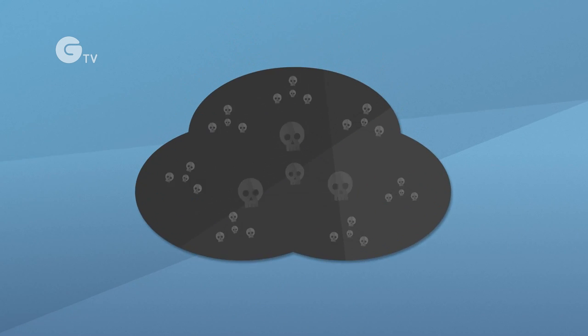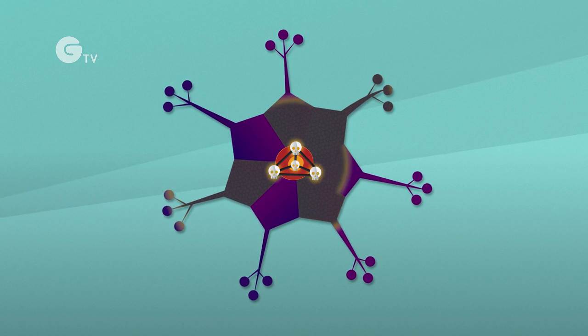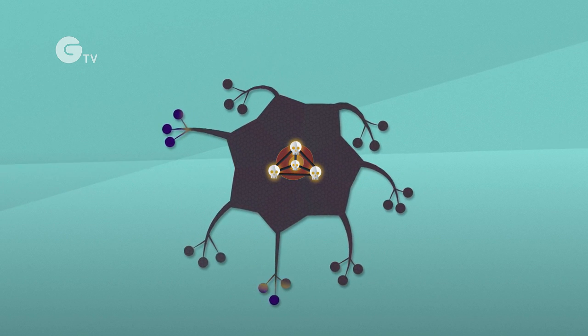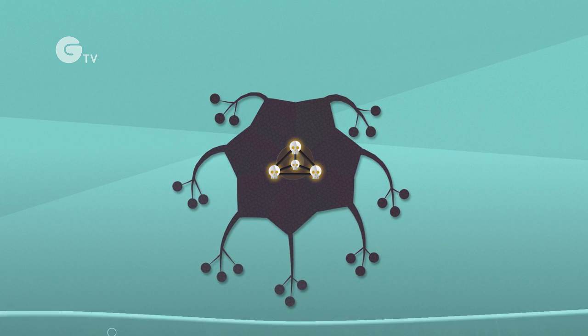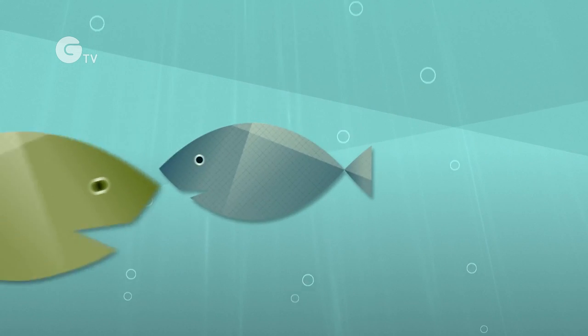Coal pollution also contains toxic mercury that damages the nervous system and is especially dangerous for babies and young children because it can cause developmental problems. Mercury rains down into our oceans, rivers, and lakes, contaminating our fish and seafood.